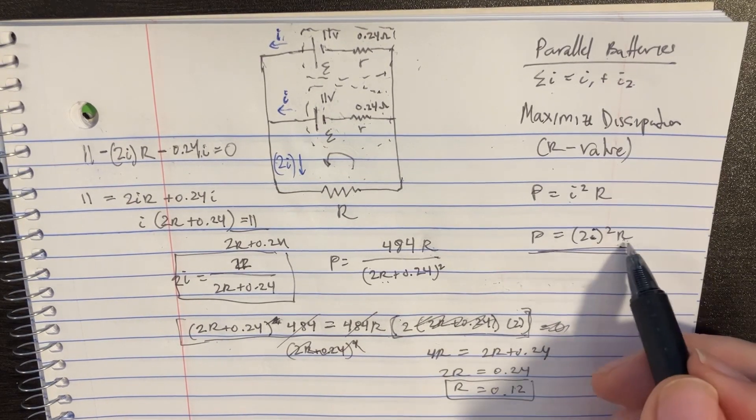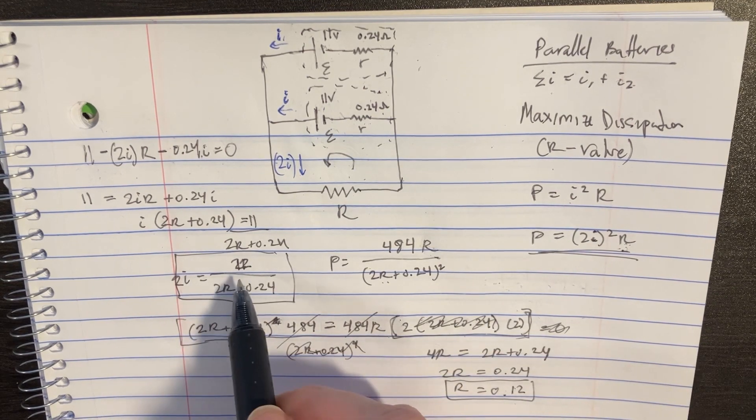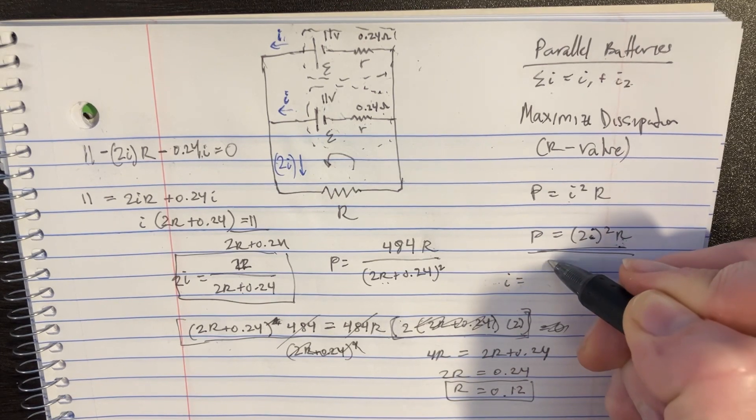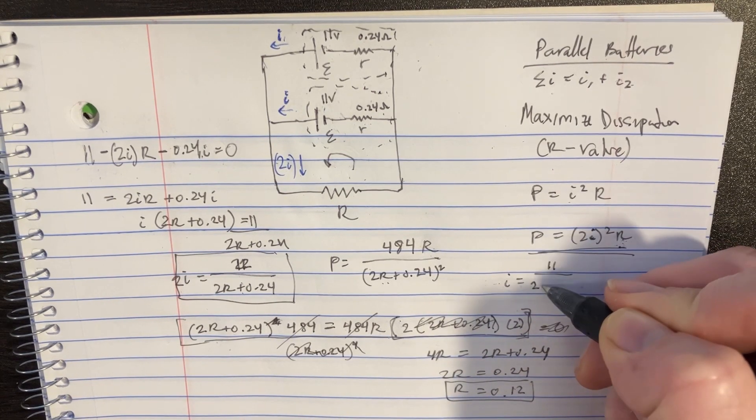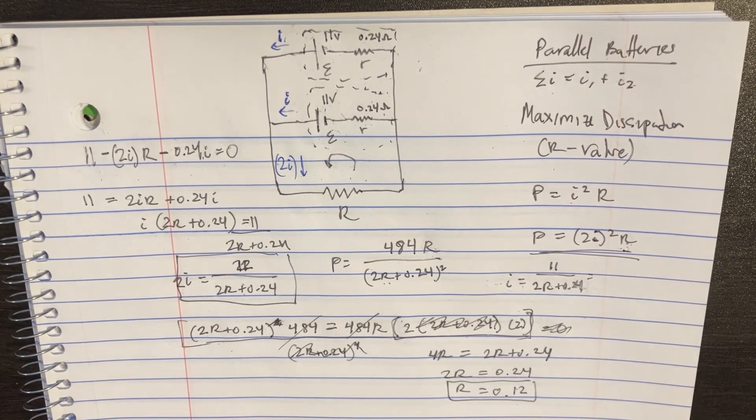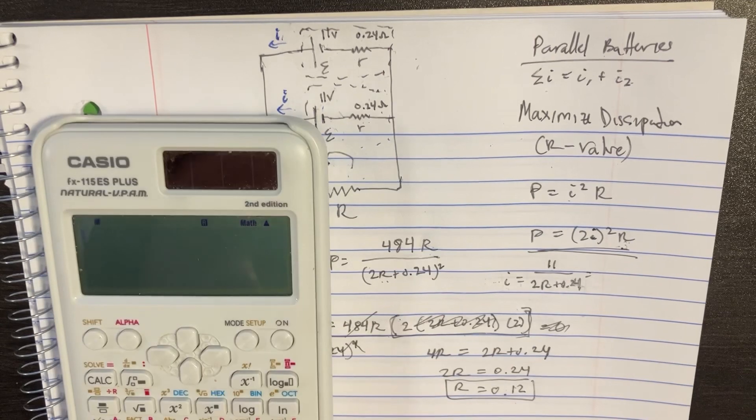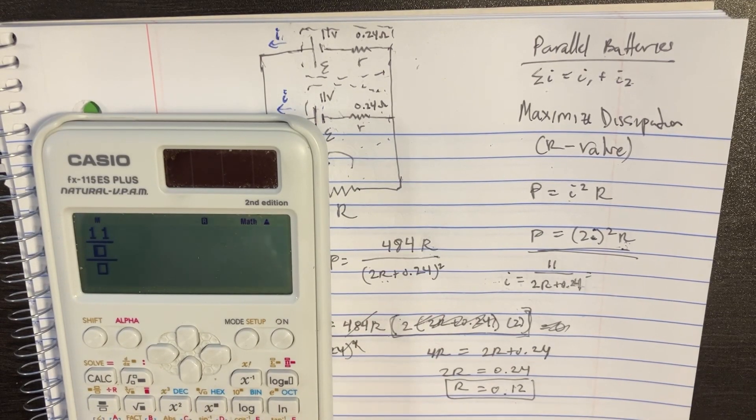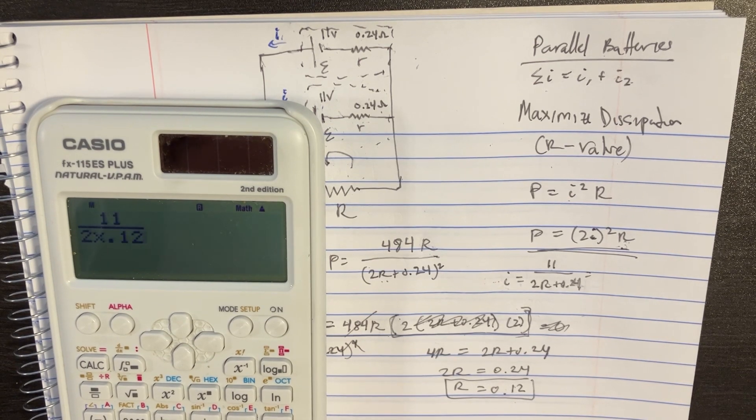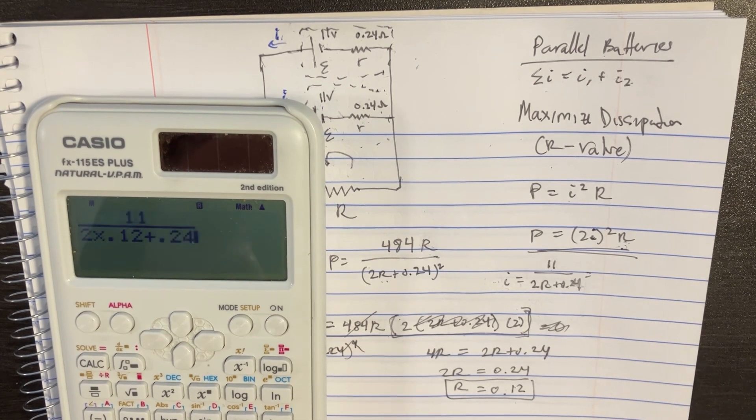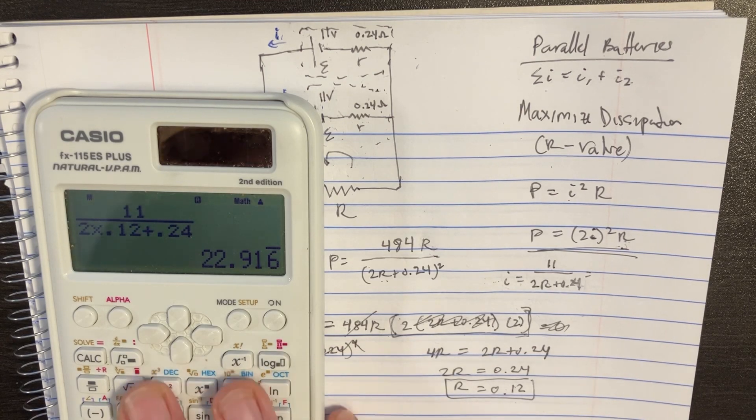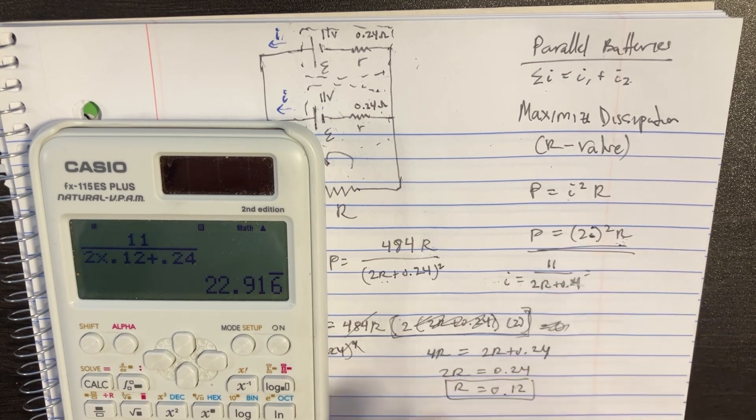So now we can go ahead and plug in our i's, and remember that i is actually supposed to equal 11 divided by 2r plus 0.24, which should be equal to 11 divided by 2 times 0.12 and then plus 0.24. So we get this current, and we want to multiply that by 2.